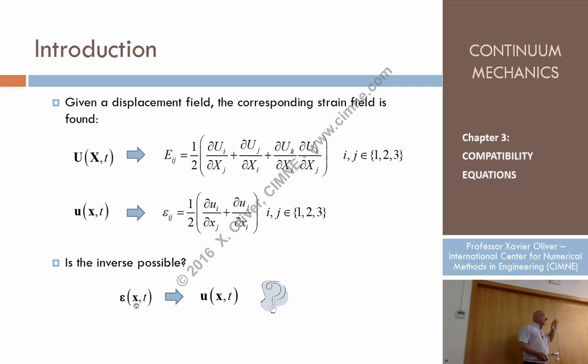Given six functions, we place them in a symmetric way in a second-order tensor. Is there a displacement field that fulfills these equations to return these strains?